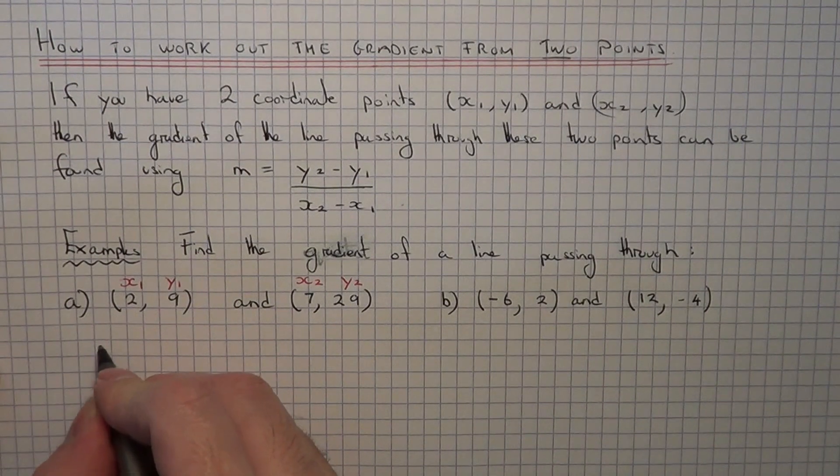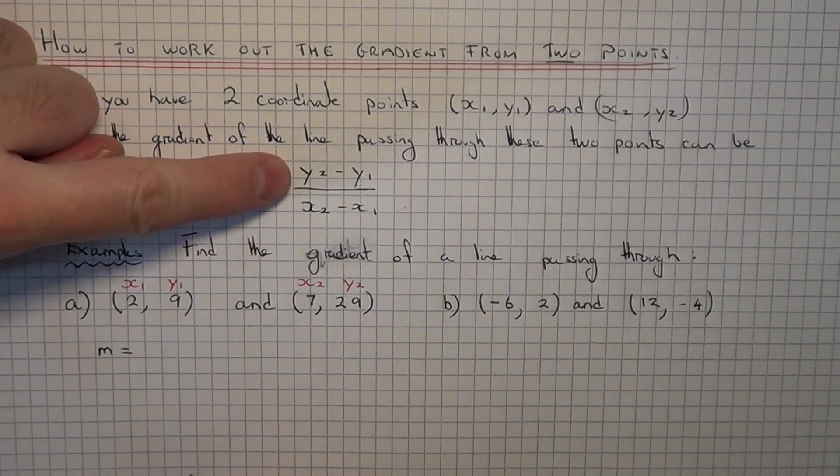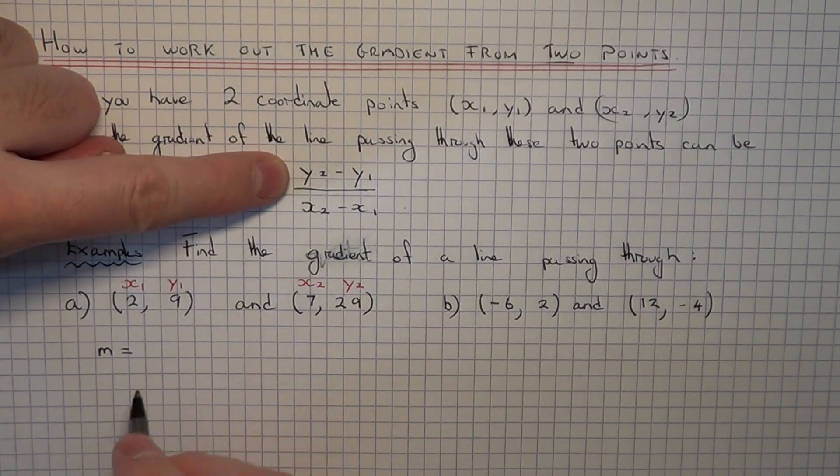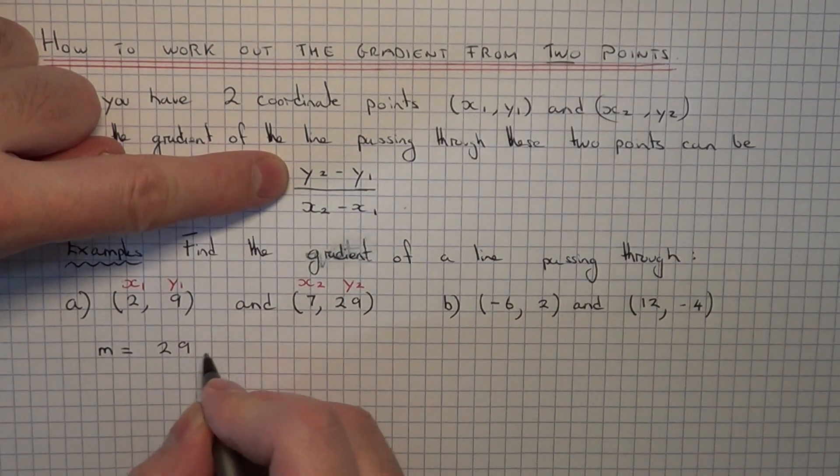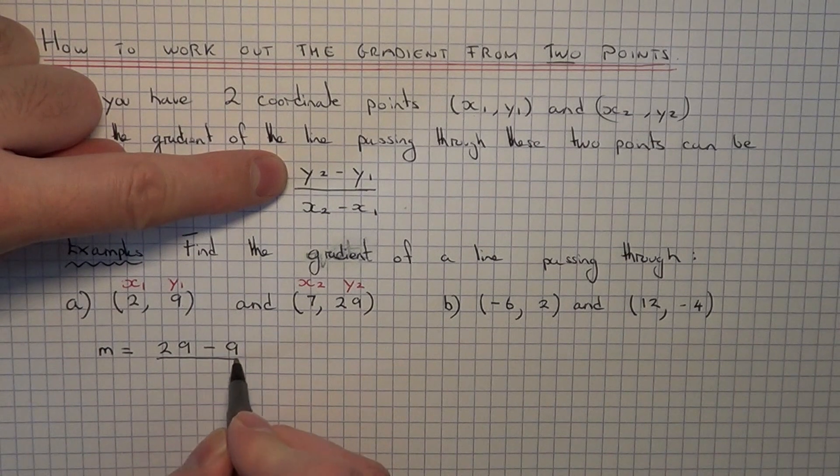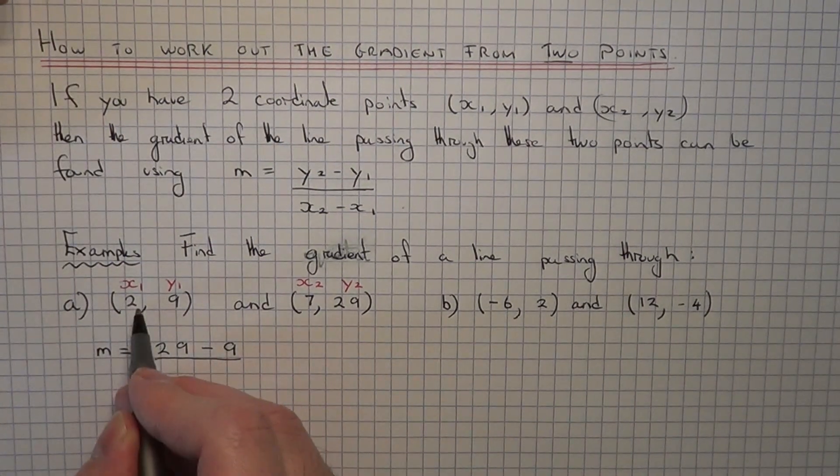So the next thing we need to do is substitute the values into this formula at the top. So it's y2 minus y1, so it will be 29 take away 9, over x2 minus x1, so 7 minus 2.